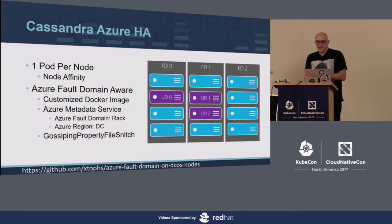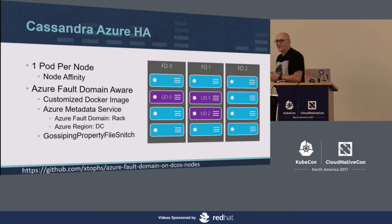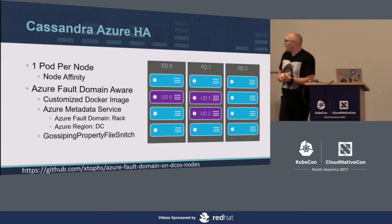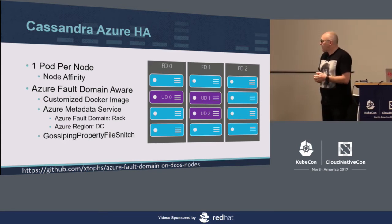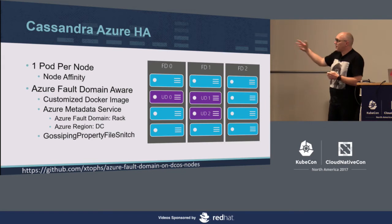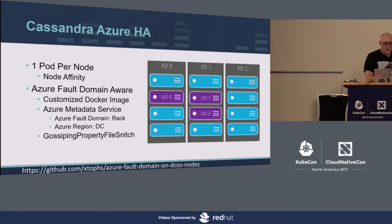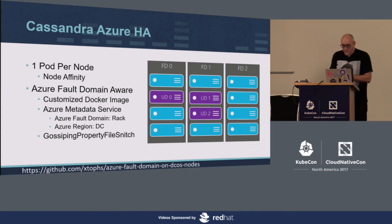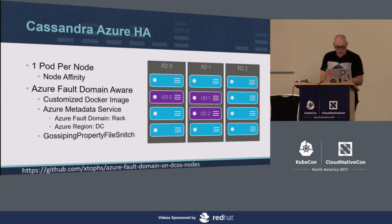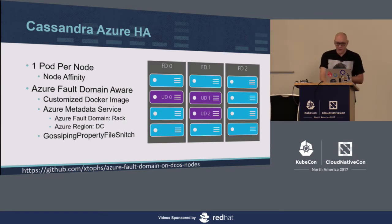The Cassandra feature we configured is the gossiping property file snitch — and I think that's a great word. We configured it in a custom container image that we have out on Docker Hub right now. EC2 has their own snitch and we should probably write our own at some point, but for Azure this works quite well.